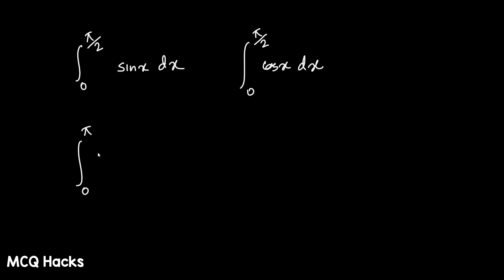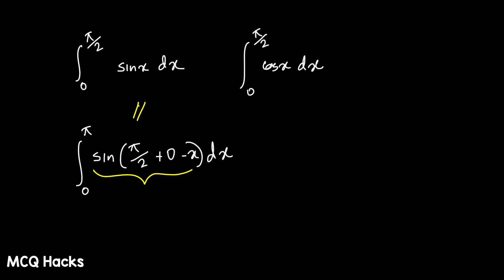You can write: integration of 0 to pi/2 of sin of (upper limit plus lower limit minus x) dx. Now let's see the second step of the problem. We will calculate sin x to sin^n x, and the second step involves cos x to cos^n x. If you have the formula, you can see the end result.